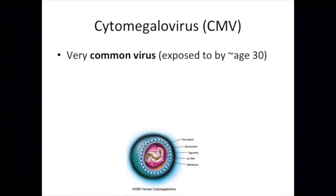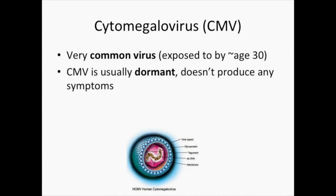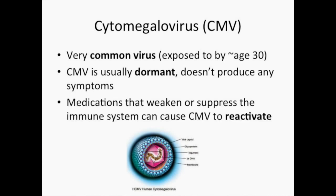Next, there is cytomegalovirus, or CMV for short. CMV is actually a very common virus that almost everyone has been exposed to by the time they turn 30. Most of the time, CMV just resides in the body without producing any symptoms. However, in patients who are on medications that suppress or weaken the immune system, CMV that is dormant in the colon, or the upper GI tract, can reactivate. This can cause diarrhea and sometimes abdominal pain as well, which is why CMV can often feel like a flare of IBD.